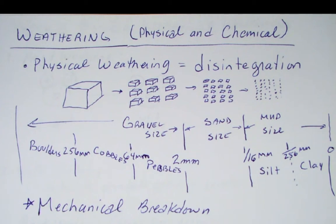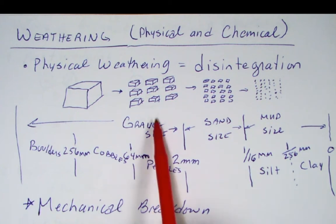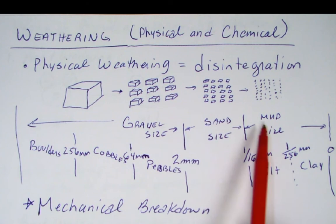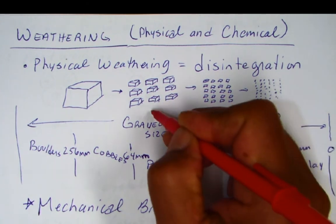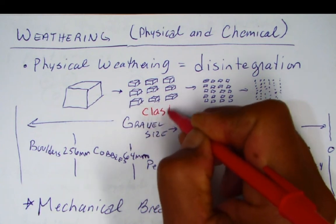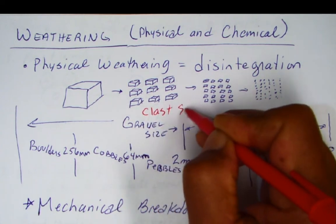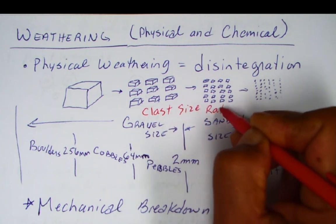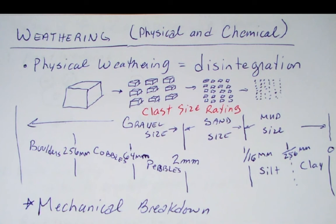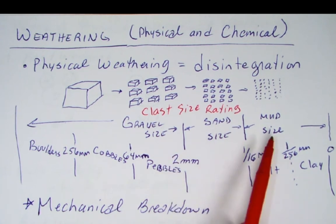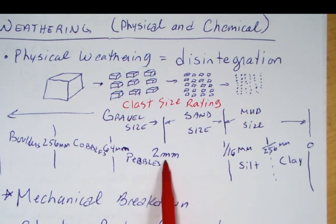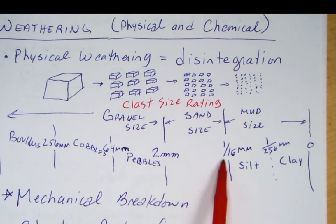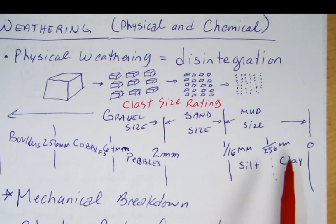Physical weathering is a disintegration. Think of it as having larger pieces and breaking them down into smaller pieces. You're going from something that's gravel size to something that's sand size to something that's mud size. These are called clasts — 'clast' means a broken particle — and the clast size ratings. I'm only going to ask you these three: gravel size, sand size, and mud size. Gravel size is coarser than two millimeters, whereas sand size is anywhere between two millimeters and one sixteenth of a millimeter.